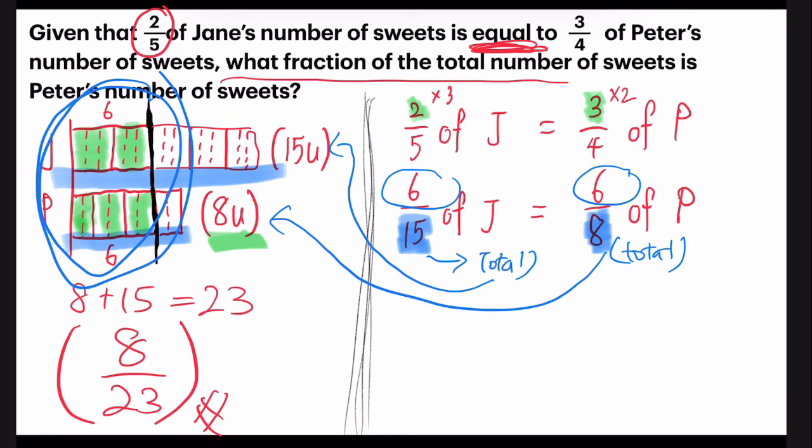Now the same thing. You can go on to answer the last part of the question. Fraction of total number of sweets is Peter's number of sweets. So you focus, the answer is eight here. And then same thing, you add 15 plus eight and you get 23. And that's the answer.